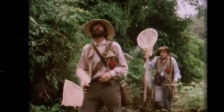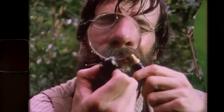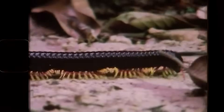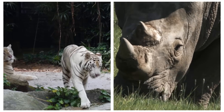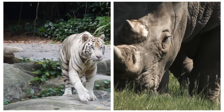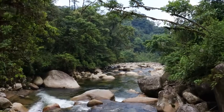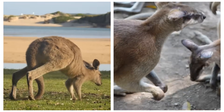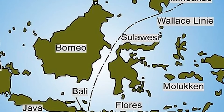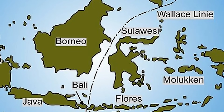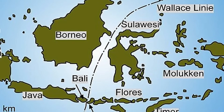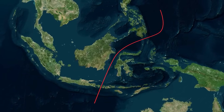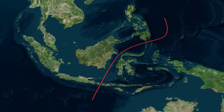As Wallace explored the islands of the Malay Archipelago, he observed a dramatic difference in the types of animals found on either side of a specific line running through the region. On one side, he encountered animals similar to those of Asia, like tigers and rhinoceroses. On the other side, he found species more commonly associated with Australia, such as marsupials like kangaroos and wallabies. Wallace's observations led him to propose that the region was divided by an invisible boundary separating two distinct ecosystems, which became known as the Wallace Line — one of the most important natural divisions in the animal world.